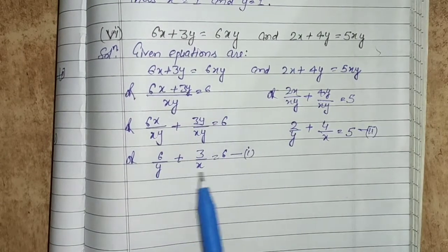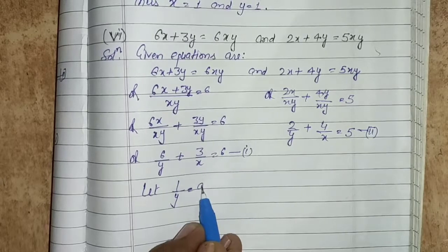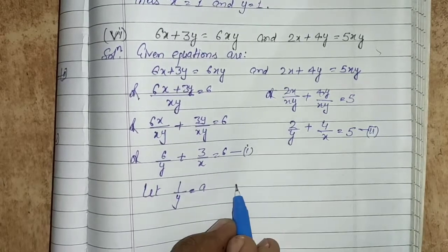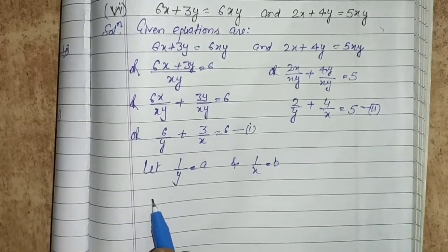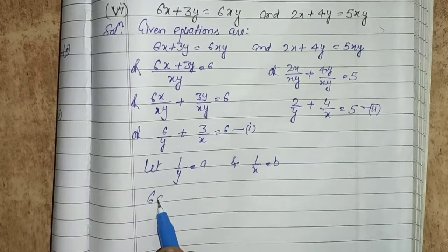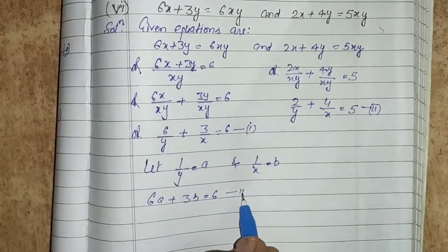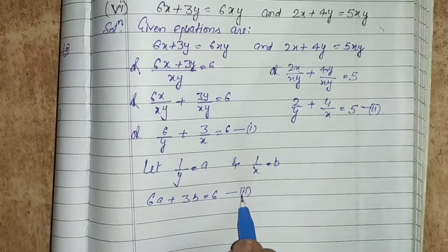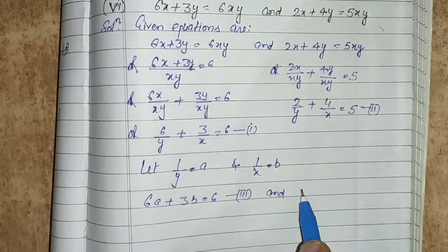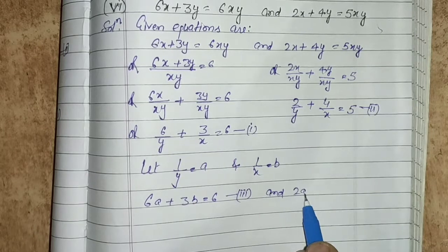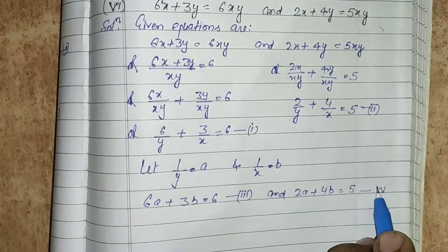Now assuming 1 upon y equals to a and 1 upon x equals to b, the equations transform. The first equation becomes 6a plus 3b equals to 6, which is the third relation. The second equation becomes 2a plus 4b equals to 5, which is equation number 4.